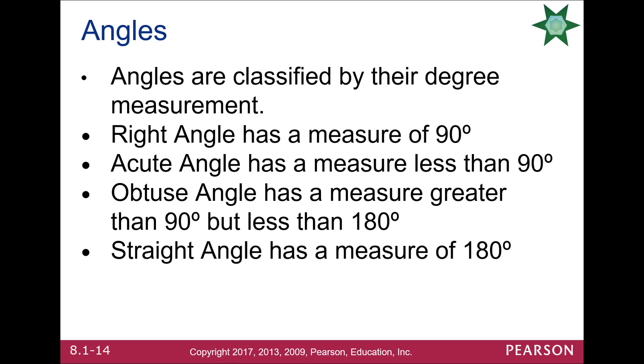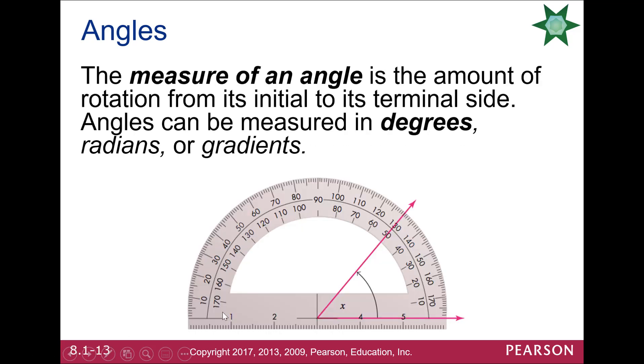If we went back to the protractor for just a minute, a straight angle would look like going all the way around this and ending up over here. So this terminal side would basically be laying flat. So a straight angle is basically a flat line, and it's 180 degrees.